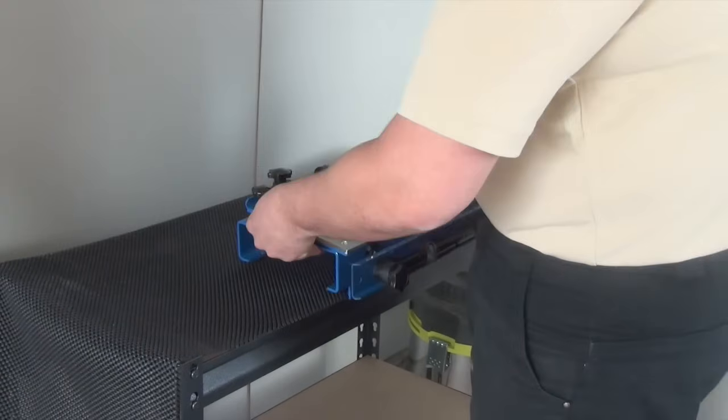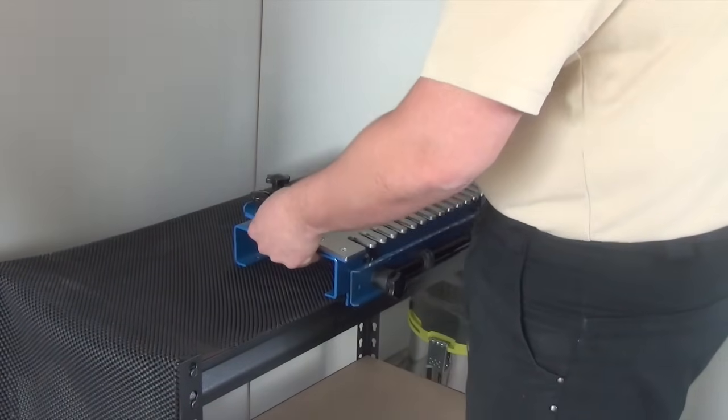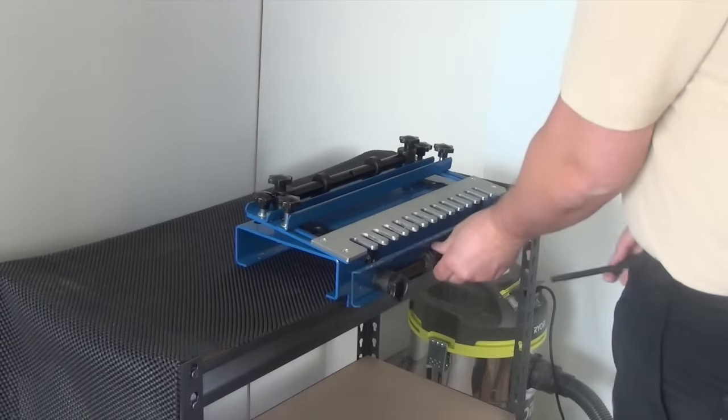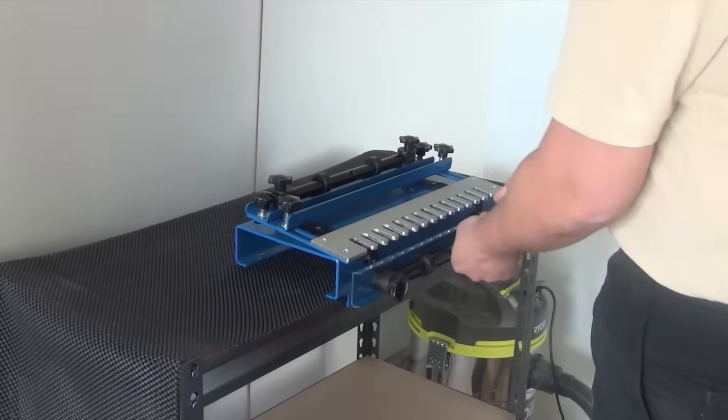First we take the jig out of the box. There is very little assembly required with just the front and top cam lock clamp handles to be attached to the jig.